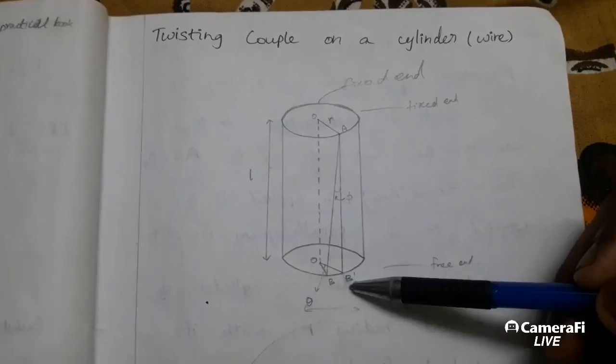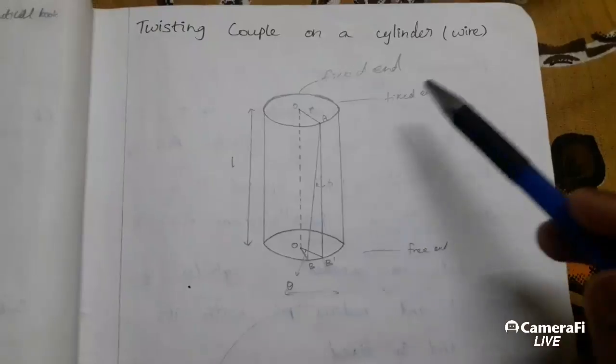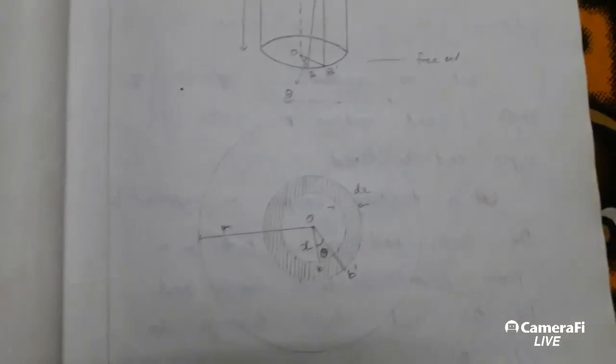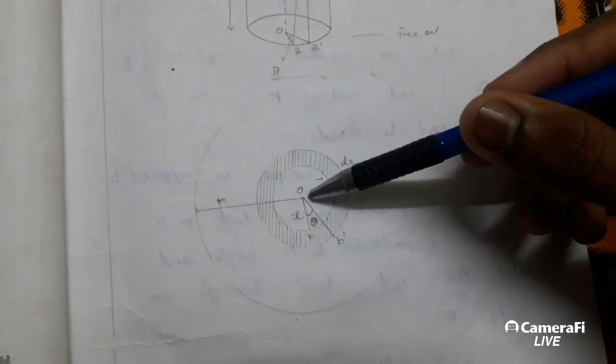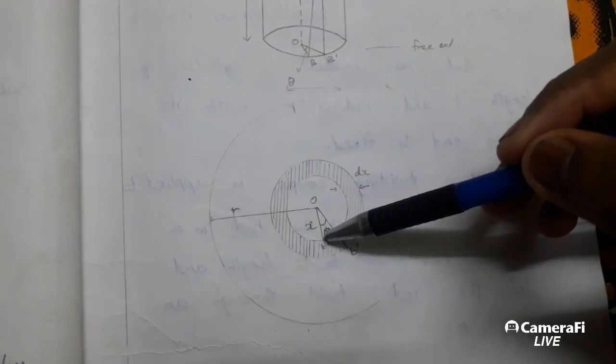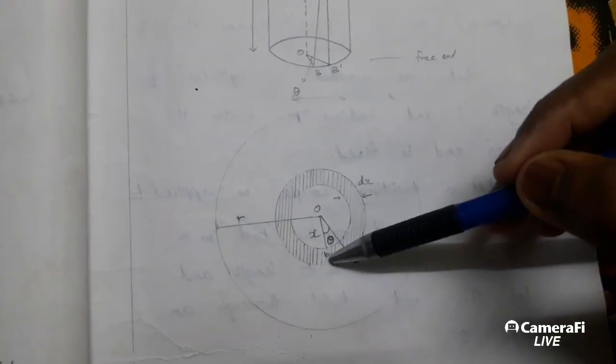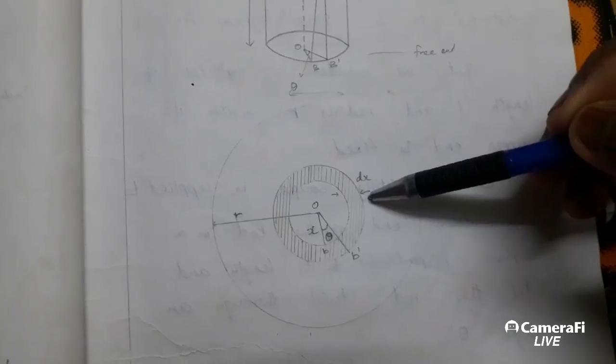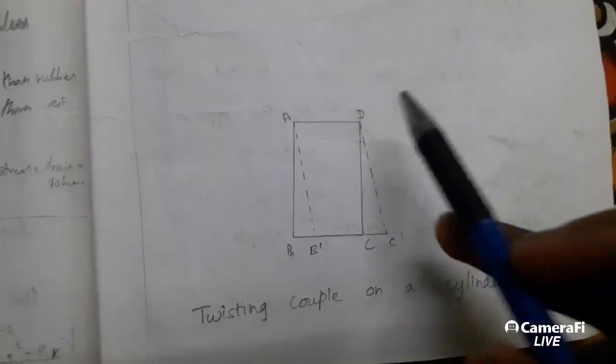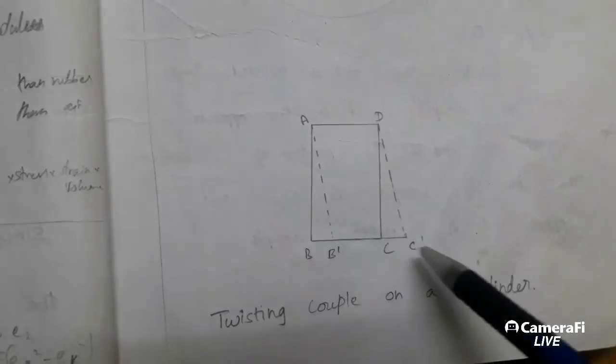Now the cylinder is rotated through an angle theta. In this, one end is fixed and another is the free end. Let us take the sectional view which consists of a center O, radius R, at a distance of the sections as A, B, and B prime. The distance between O and B is X, and the small distance is DX. When rotated, the point changes from A, B, C, D to A, B prime, C prime, and D.